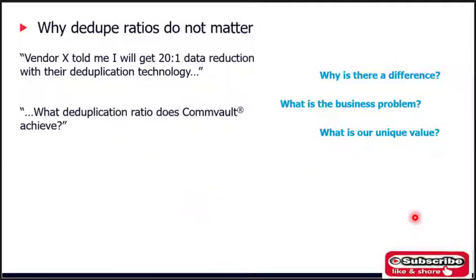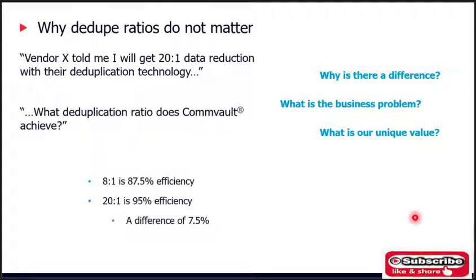A 10-to-1 ratio means you are throwing away 90 percent of the data you read and process. A 20-to-1 dedupe ratio means you are throwing away 95 percent of the data you read and process. You achieve a high dedupe ratio by reading and processing the same data over and over again, very frequently, or for longer periods of time. Think of all the work the infrastructure components have to do — the source disk, source CPU, the network, media server — only to have all that effort go to waste because the data already exists on the storage target.